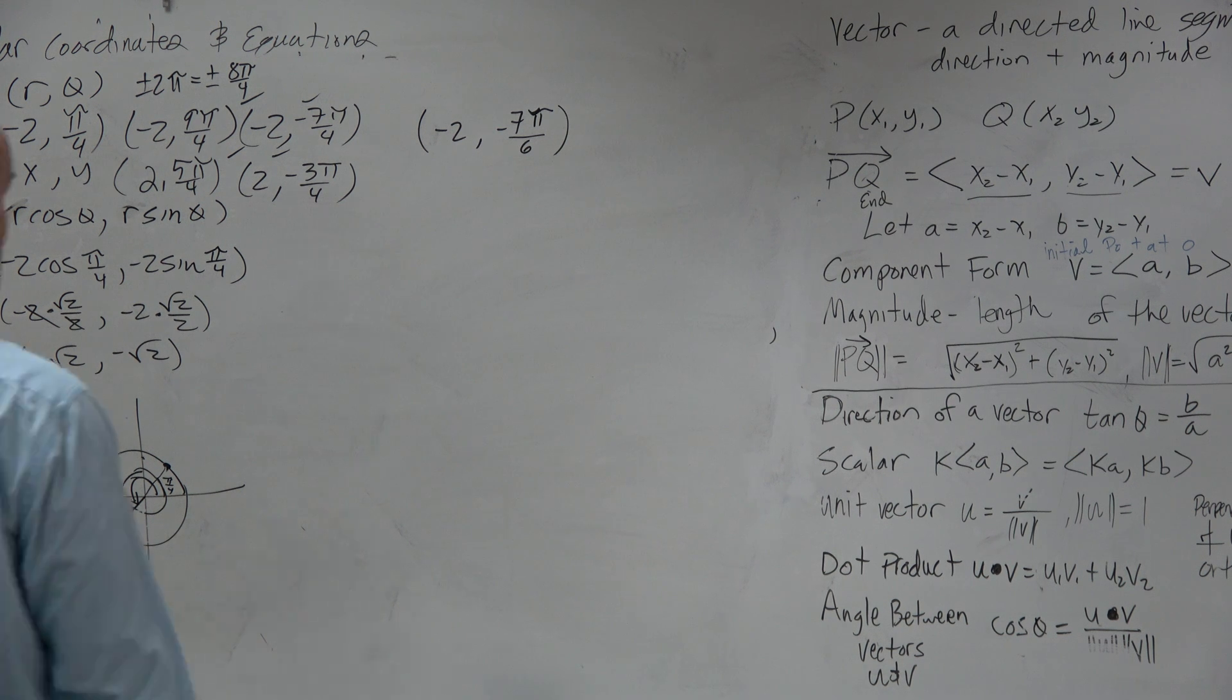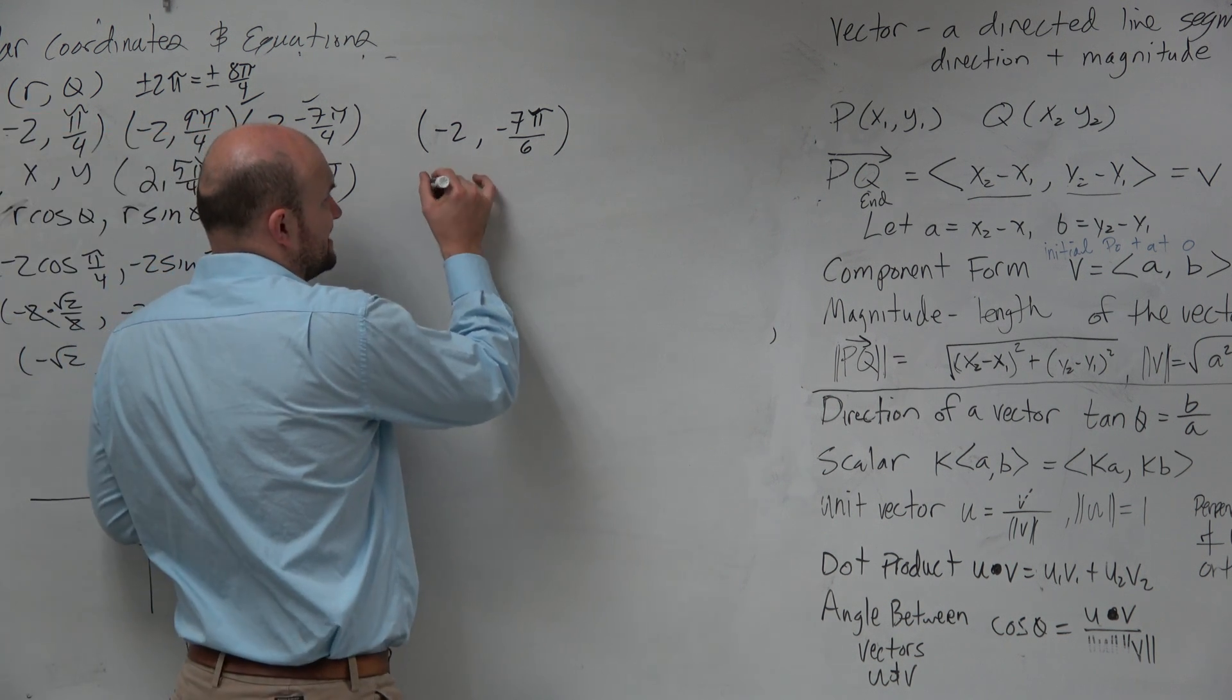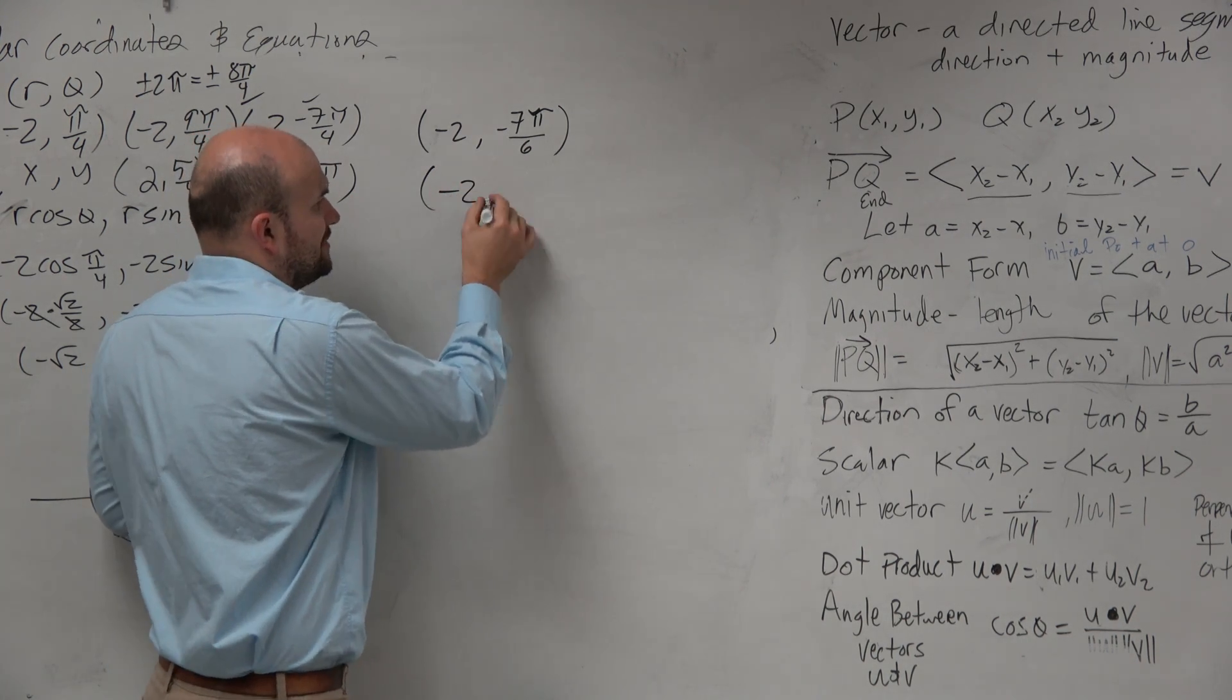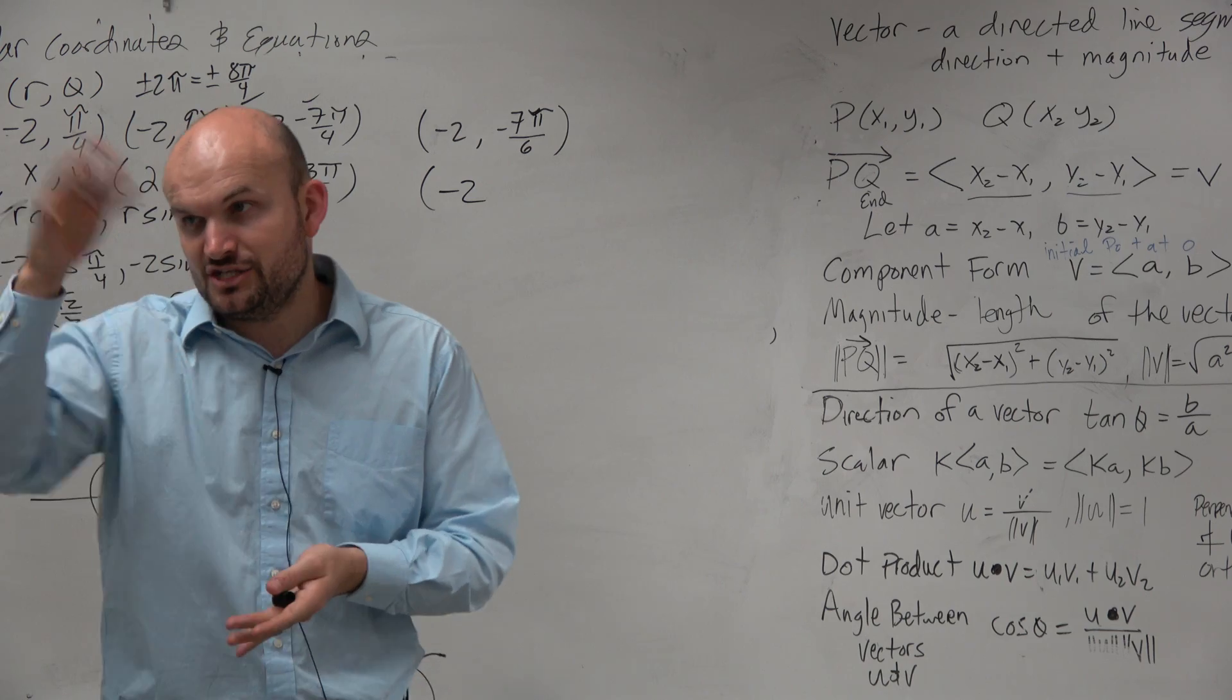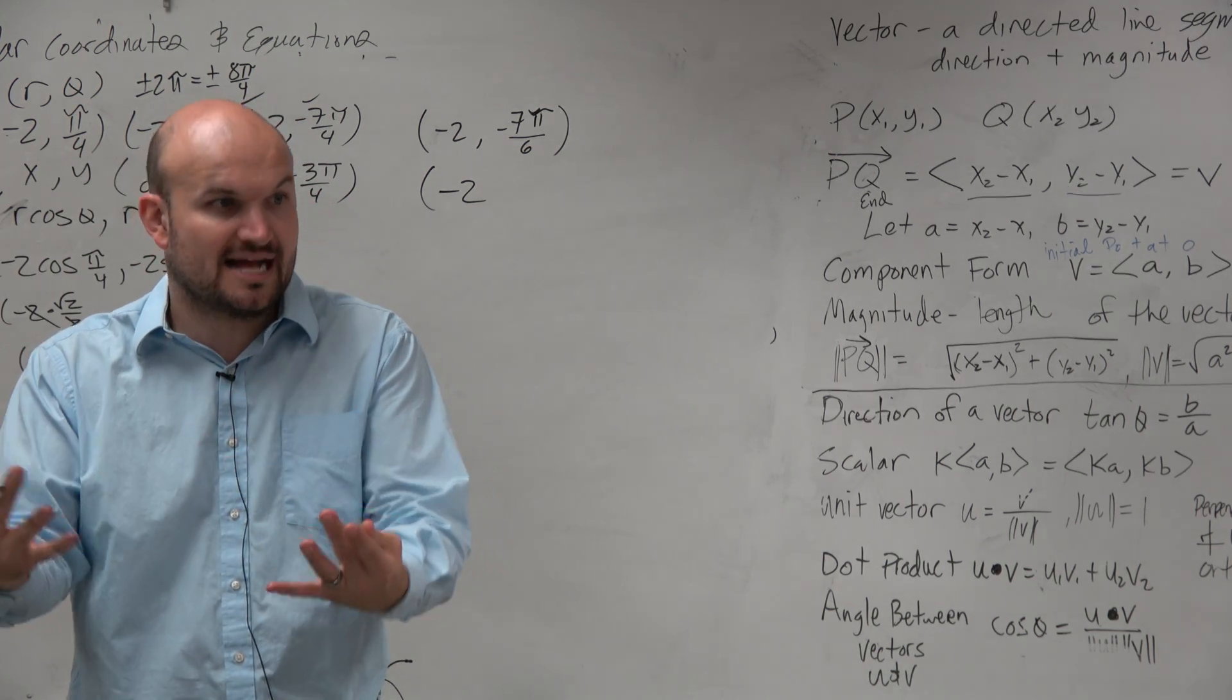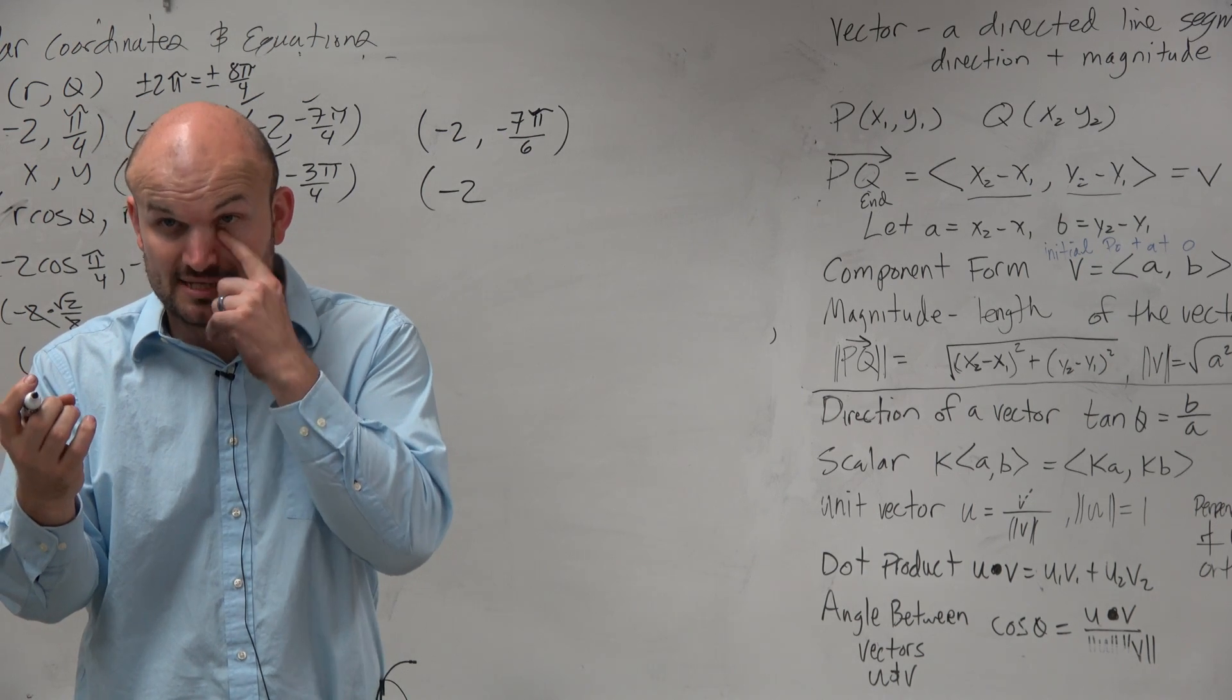So if I want to represent three different representations, I think the first and easiest thing to do is just to find any coterminal angles. Keep the radius the same, forget about that, and then just add and subtract 2π. That's a very easy way to find an angle that's exactly the same, or a polar point that's exactly the same.